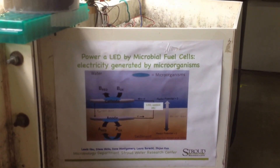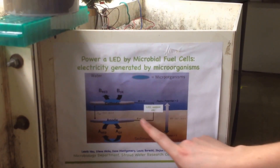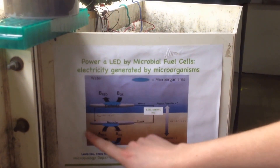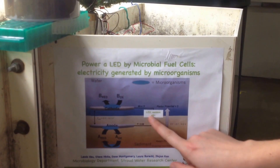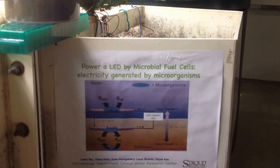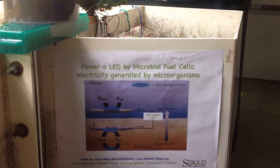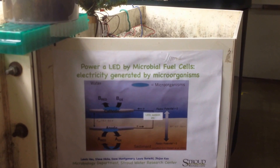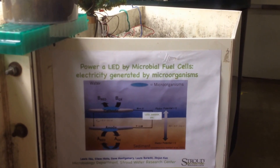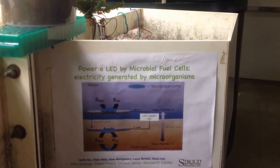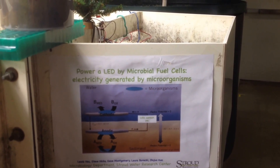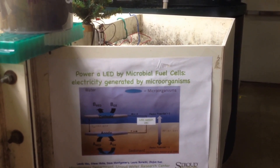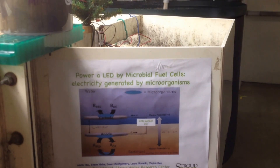The anode is buried in the sediment, where we have anaerobic conditions, or the absence of oxygen. So instead of using oxygen, the microbes use organic matter as a food source. And as they oxidize the organic matter, it releases electrons.